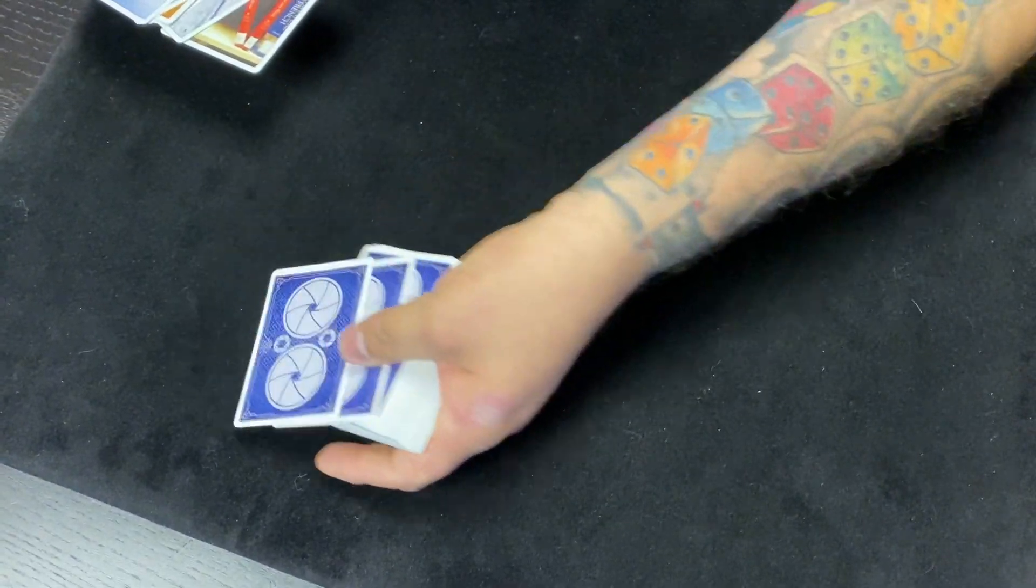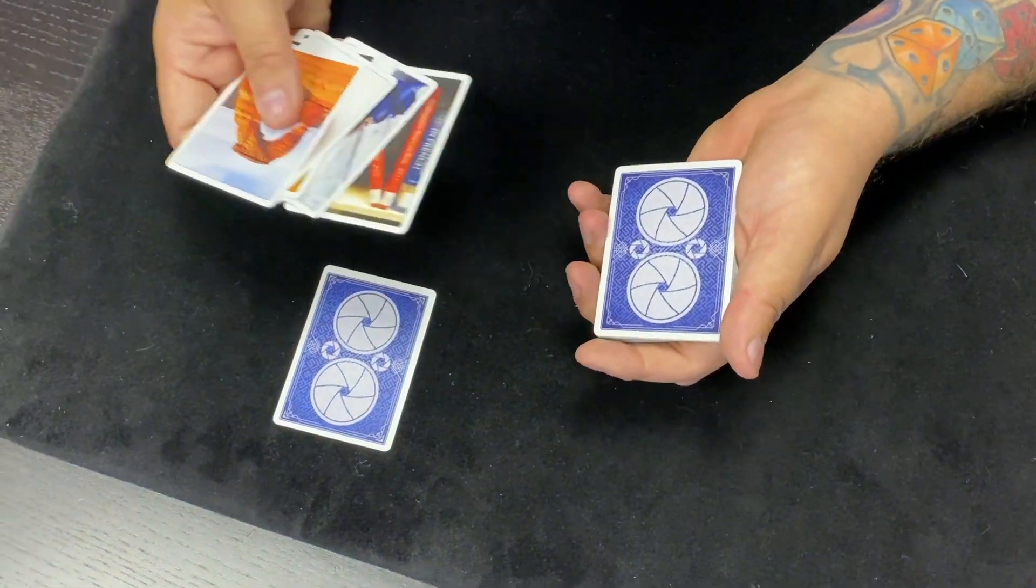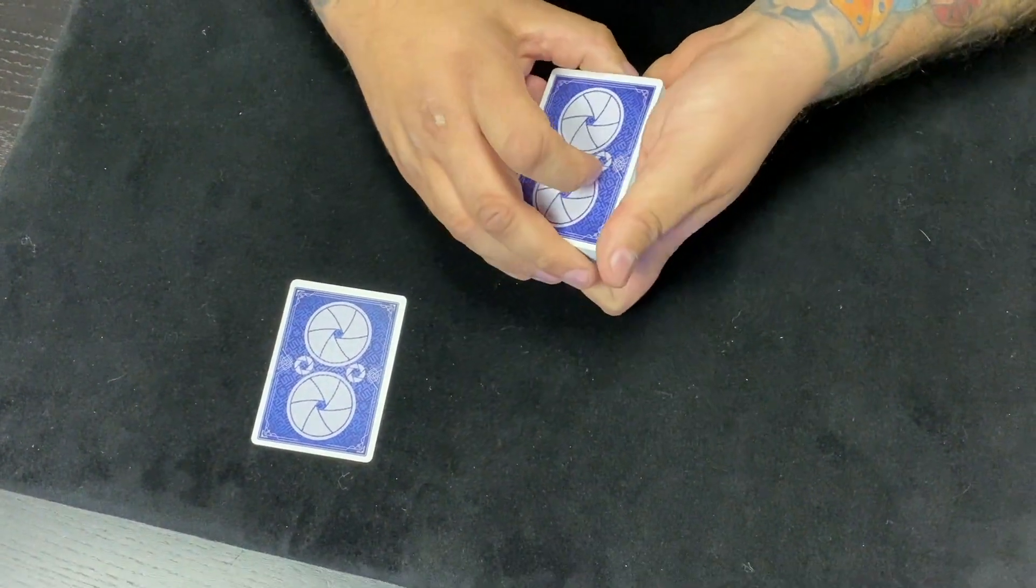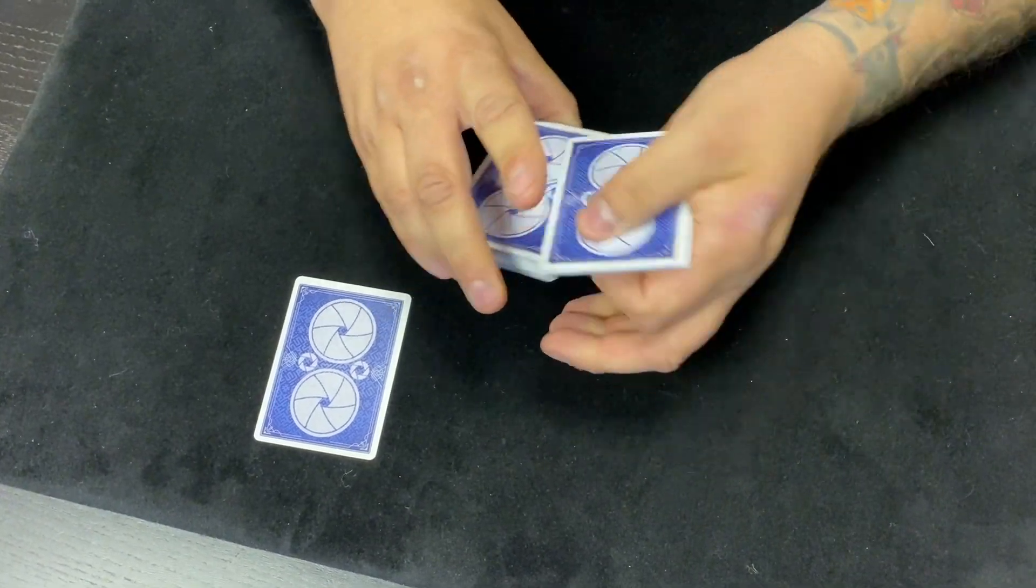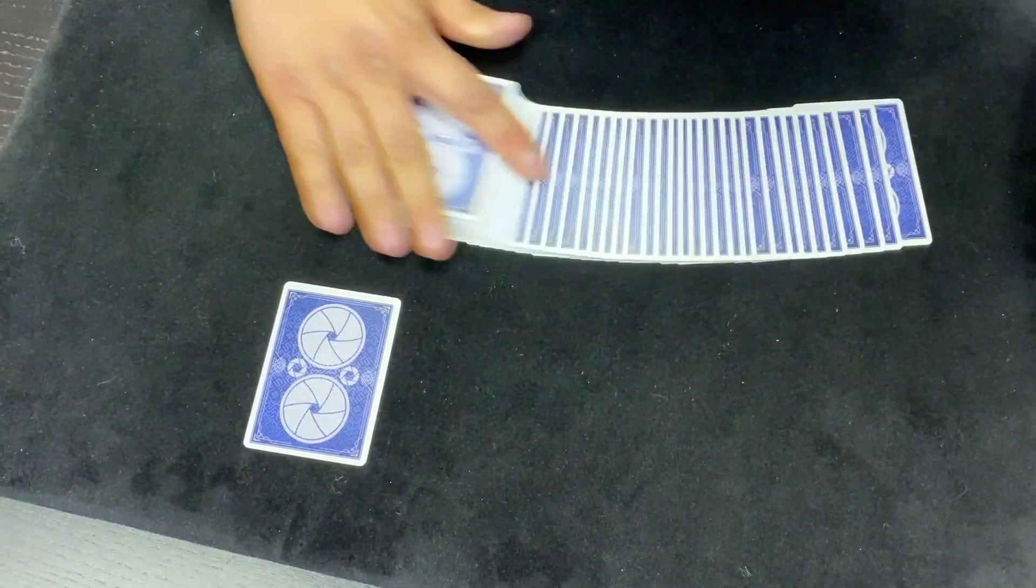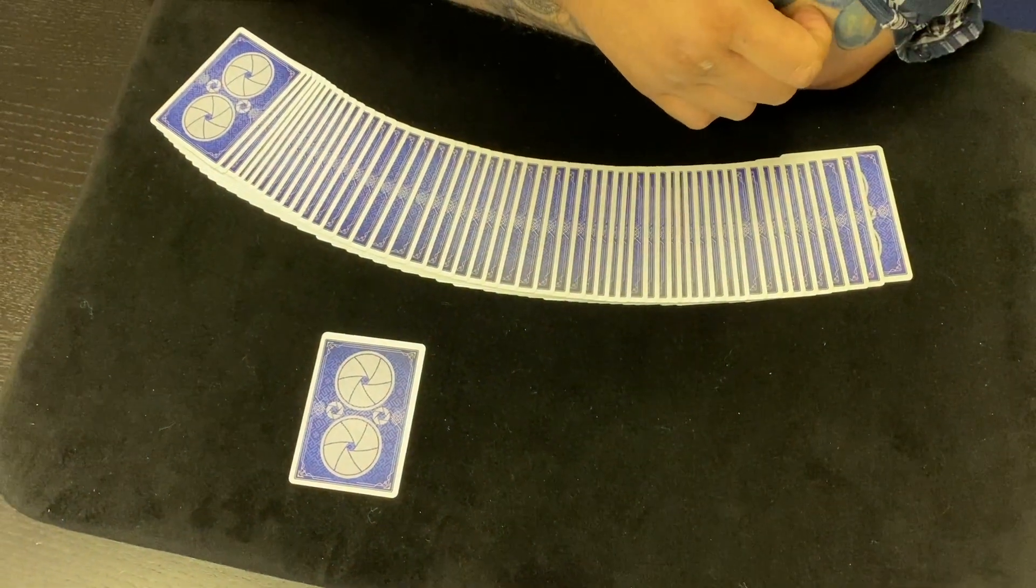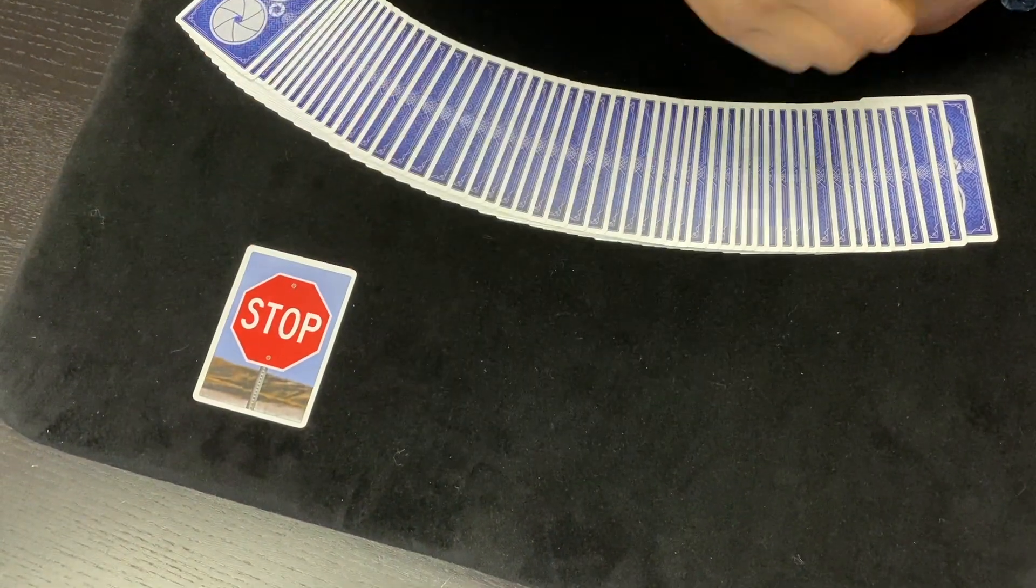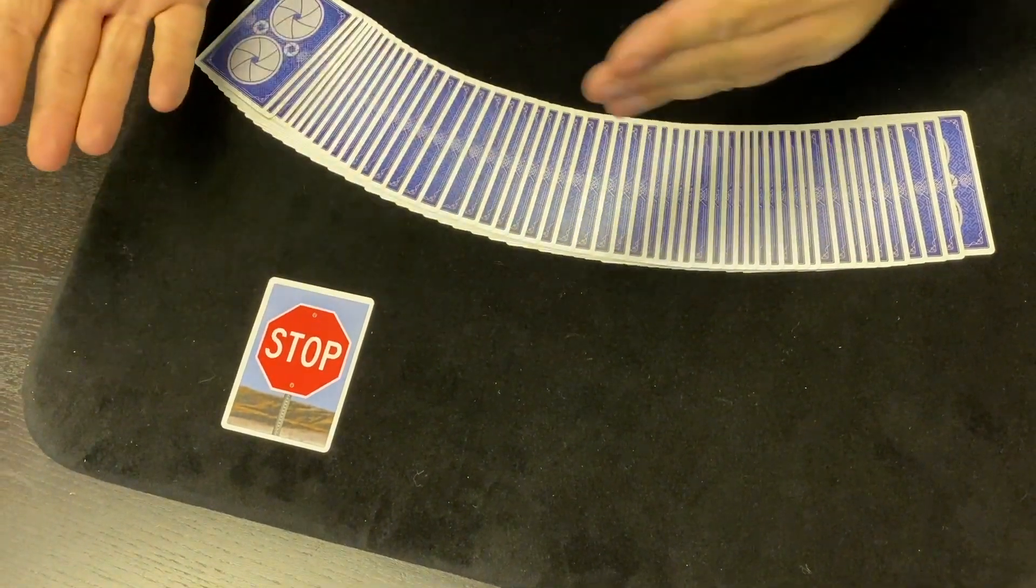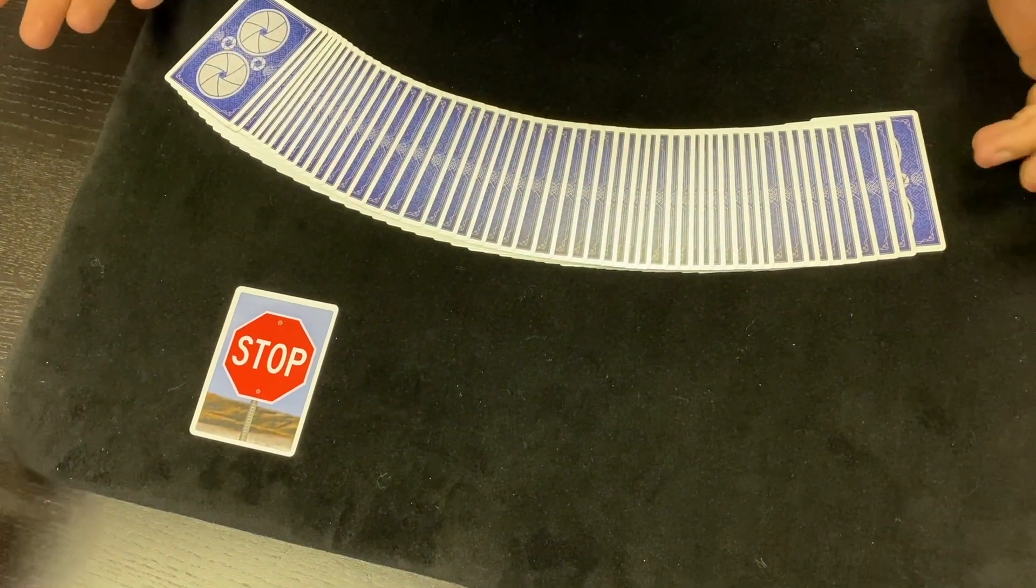And again, this was a totally free choice and that's important for you to understand. There are I think about 60 different images here and you could have stopped on any of them, but you stopped right there. Isn't it interesting that you stopped on the stop sign? I know, right? I mean, that's just weird as far as I'm concerned. I mean, you could have stopped anywhere. You stopped on the stop sign.